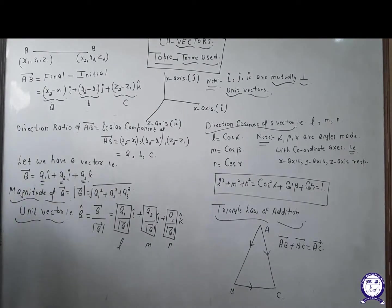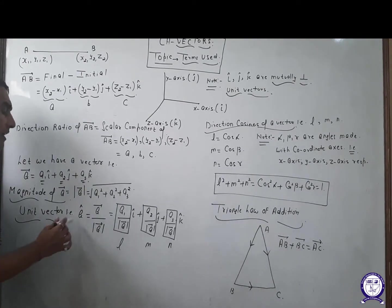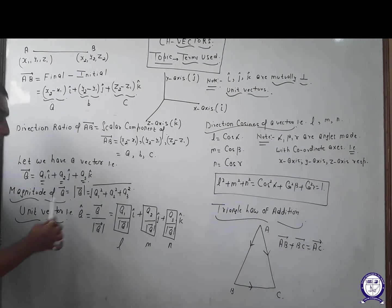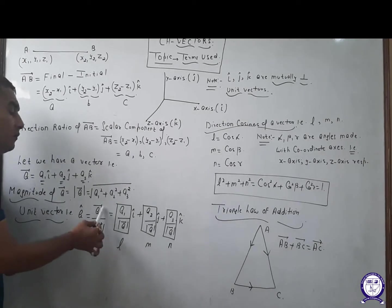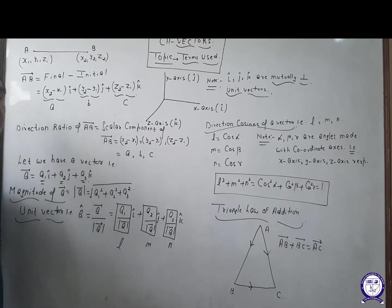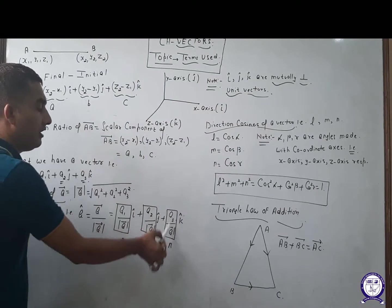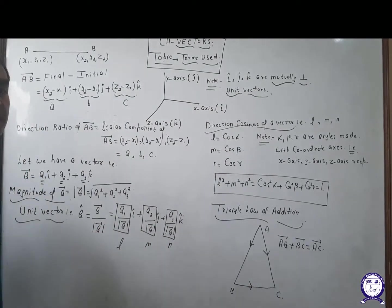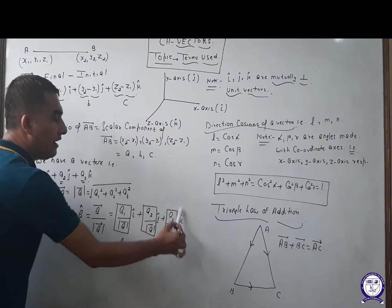A unit vector is a vector having magnitude one. How can we get a unit vector? A unit vector, represented by cap, is obtained by dividing the vector by its magnitude. Vector upon its magnitude is called the unit vector.